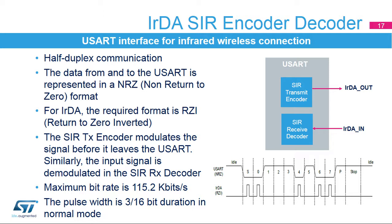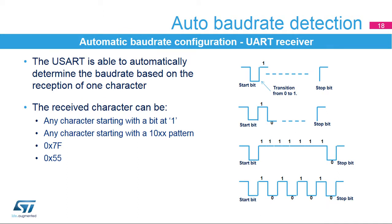In normal mode, the transmitted pulse width is specified as 3/16 of a bit period. The USART receiver is able to detect and automatically configure the baud rate based on the reception of any one of the following characters. The received character can be any character starting with a bit at 1; in this case, the USART measures the duration of the start bit from falling edge to rising edge. Any character starting with a 10XX pattern; in this case, the USART measures the duration of the start and of the first data bit. The duration is measured from falling edge to falling edge, ensuring better accuracy in the case of slow signal slopes.